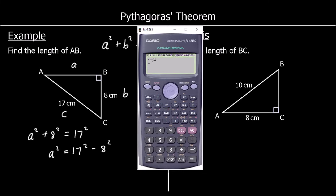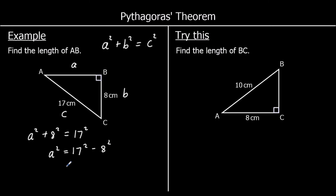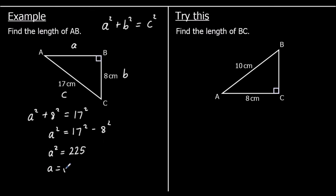17 squared minus 8 squared is 225, so a squared equals 225. To get a by itself, we square root both sides. The square root of 225 is 15, so a is 15 centimeters. So 8 squared plus 15 squared equals 17 squared, or 17 squared minus 8 squared equals 15 squared.